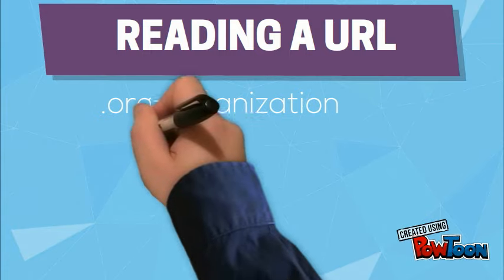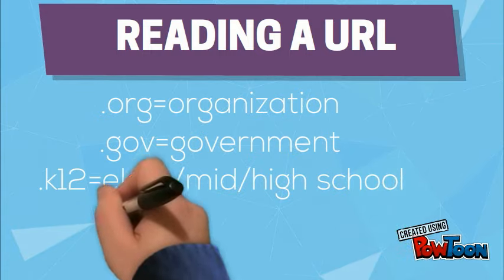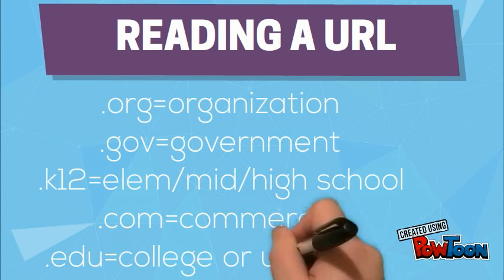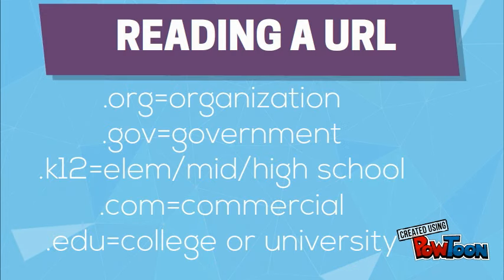So what does it mean to read a URL? The URL is the www.whatever for a website, and there's actually a lot you can learn from it. A .org is an organization or a group — a lot of kids think they can trust those, but not necessarily. Some terrorist groups are .orgs, so you've got to look closer. A .gov means it comes from the United States government, and usually you can trust those. A .k12 means it's from an elementary, middle, or high school, and usually you want to move on from those — they probably don't have anything to do with what you're doing.